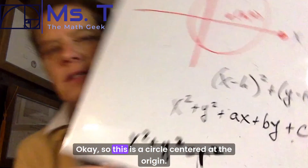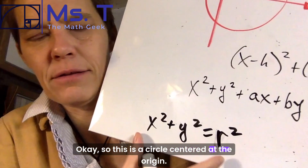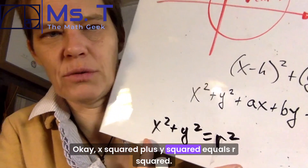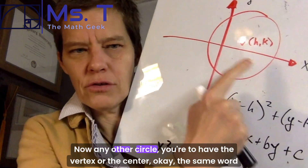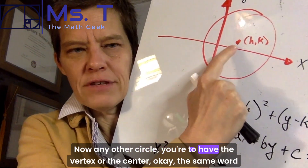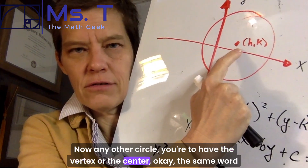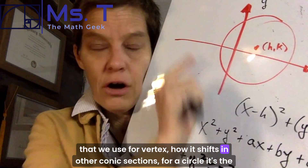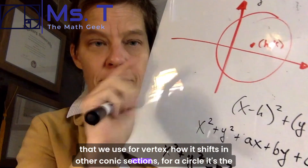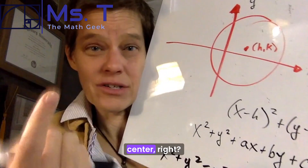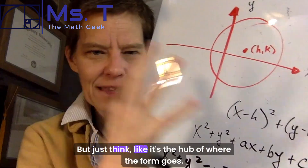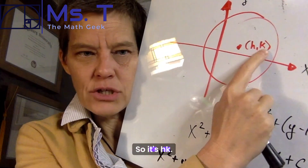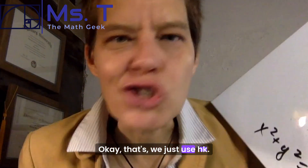This is a circle centered at the origin. x squared plus y squared equals r squared. Now for any other circle, you're going to have the center — it's the same concept as the vertex shifting in other conic sections. For a circle it's the center, it's the hub of where the form goes. So it's HK — we just use HK.